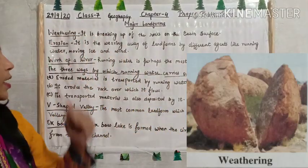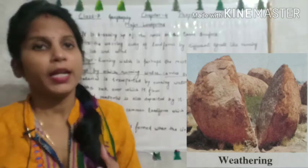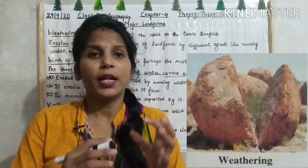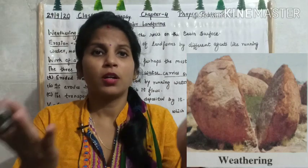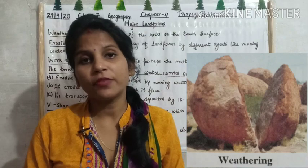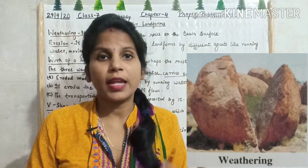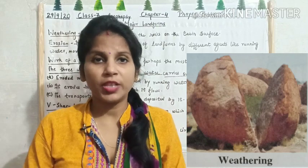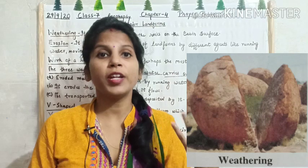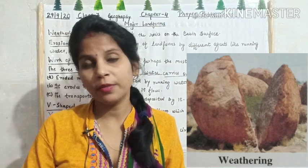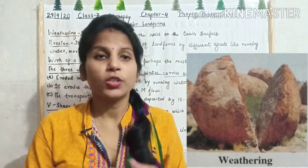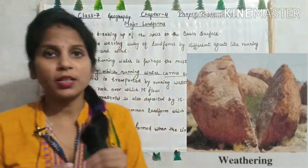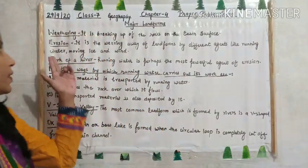Let's get started. What is weathering? It is the breaking down of the rocks on the earth's surface by various agents like running water, wind, glacier, snow, and ice. Sometimes rocks break because of very high temperature, and sometimes when it gets very cold they also break down. So weathering is the breaking down of rocks on the earth's surface, which results in the formation of soil.